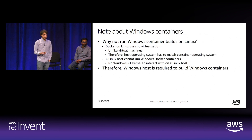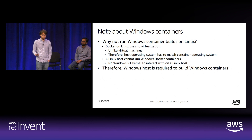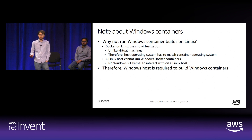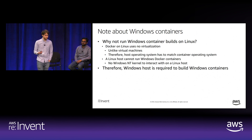Some might ask why we didn't build Windows containers on Linux—the reason is you simply can't. The container operating system must match the host. Containers don't use virtualization; system calls made by a container go directly to the kernel. There's no Windows kernel on a Linux host, so you need a Windows host to build Windows containers.